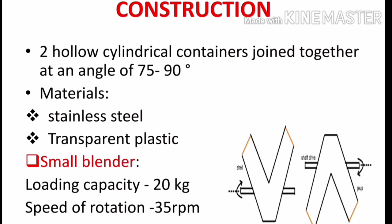During mixing, while rotating the blender, the material continuously splits and then recombines at the bottom. Inside the vessel, the material falls randomly because of the tumbling motion, causing the mixing process. Now moving on to the construction: the twin shell blender consists of two hollow cylindrical containers joined at an angle of 75 to 90 degrees. Stainless steel and transparent plastic materials are mainly used for construction.